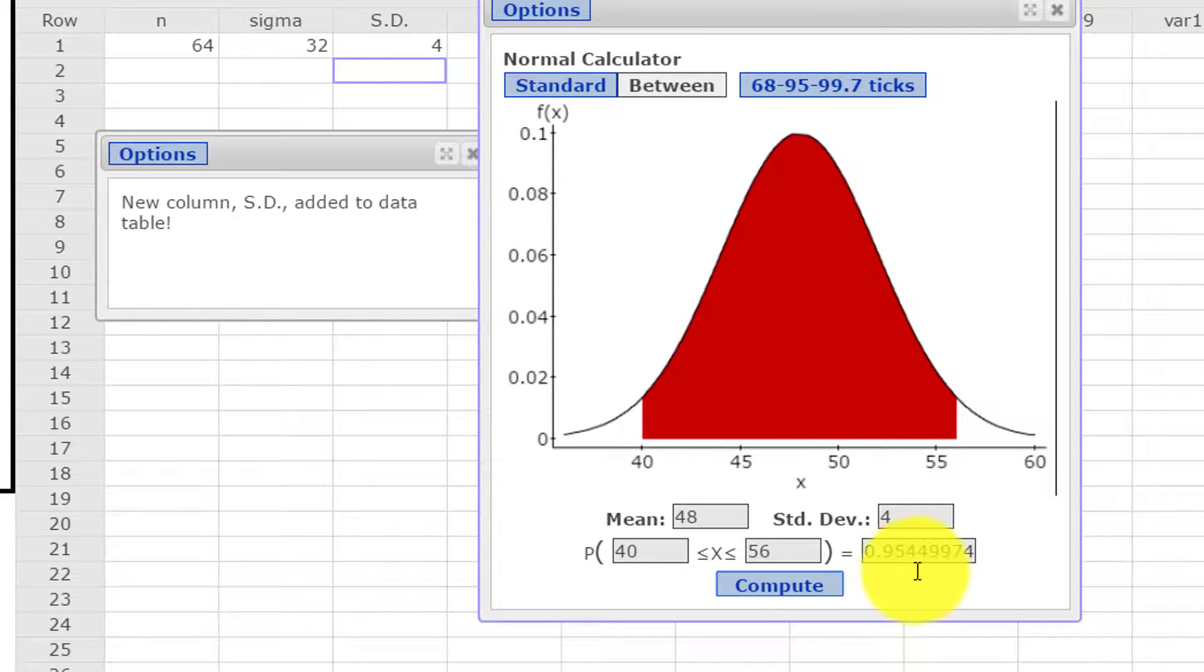It shows 40 and 56. And because I clicked on between, we've got the area in red there of 0.95, and that rounds to 0.955, I guess. Let's see if that's the answer they wanted.